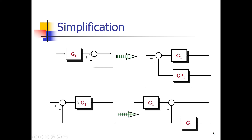Another example is when we have a system block G1. We can also replace that block by a block in the forward line and one in the feedback line. The output signal is again that signal minus that signal, multiplied by G1, which equals the first signal times G1 minus the second signal times G1, and then we get the same output signal. So that is block movement — block adjustments of a block diagram — and we can move blocks to make our analysis easier.